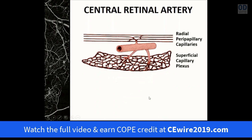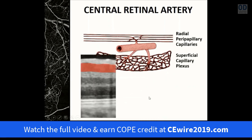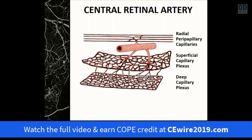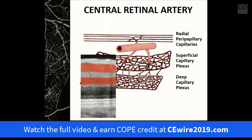The second capillary network is the superficial capillary plexus, located in the nerve fiber layer or ganglion cell layer. The third is the deep capillary plexus, located in the inner nuclear layer. Endothelial cells of the central retinal artery system are unfenestrated and joined by tight junctions forming the inner blood-retinal barrier — a barrier compromised in diseases such as diabetic retinopathy or retinal venous occlusive disease.